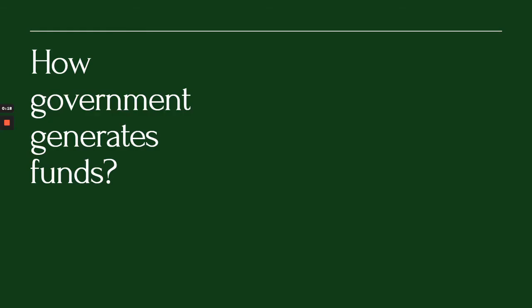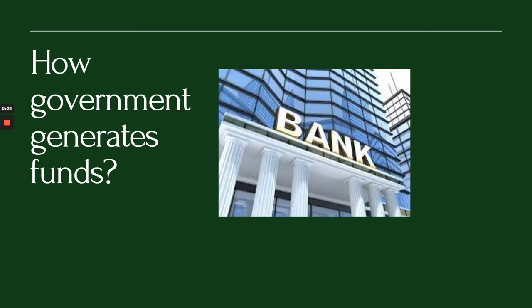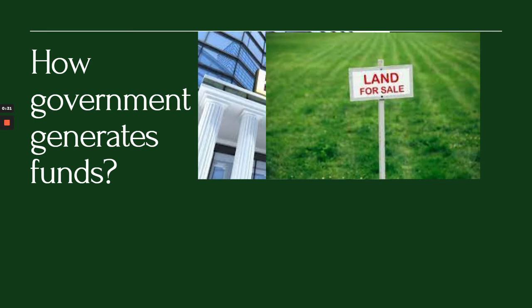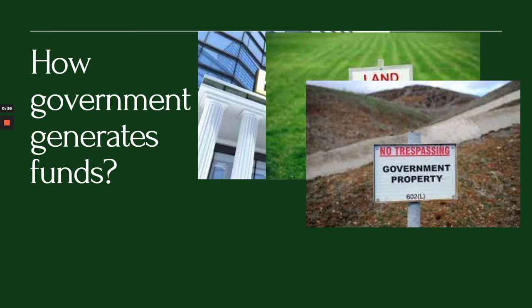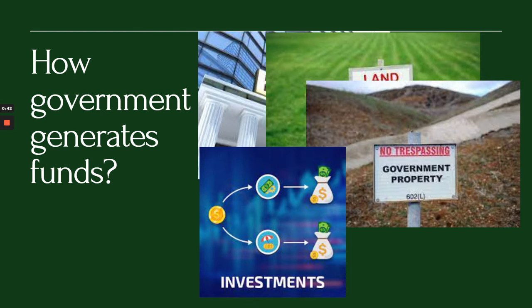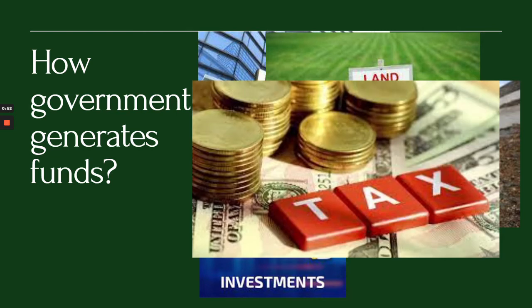The first question is: how does the government generate funds? The government can borrow funds from local or international banks. The government can also sell public land or other properties, and can also invest in corporations. However, the biggest source of revenue or funds of the government is actually tax.